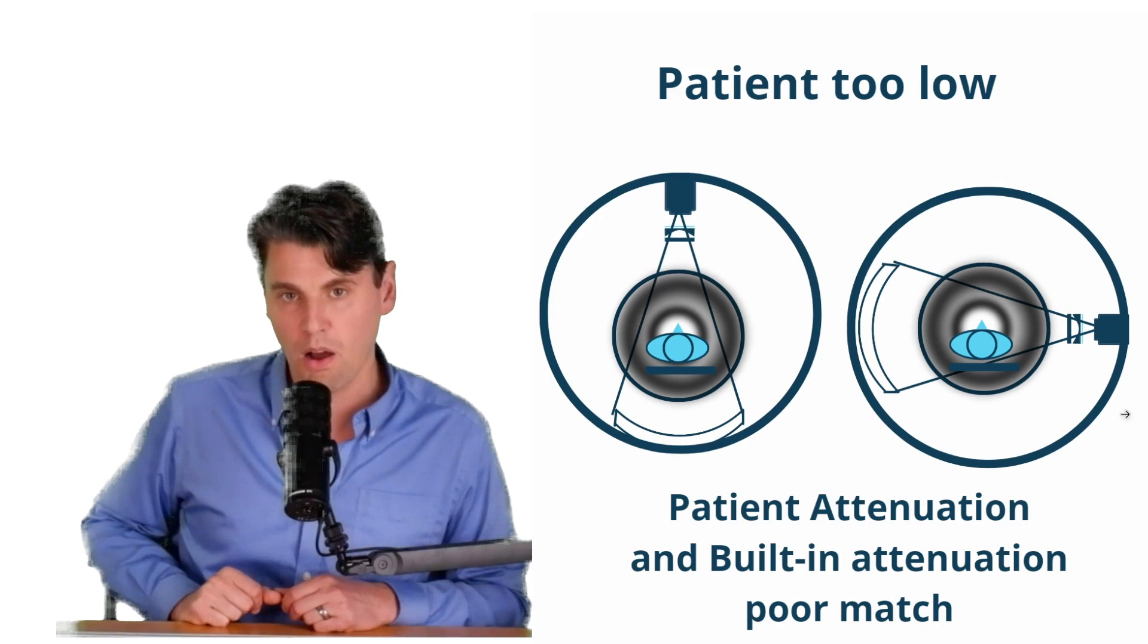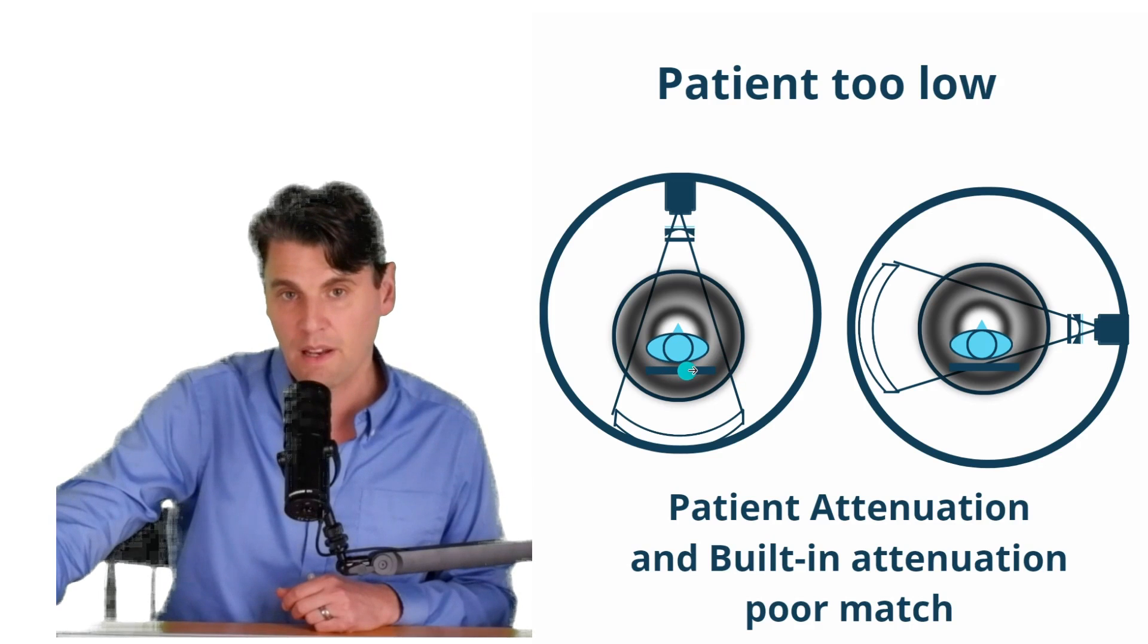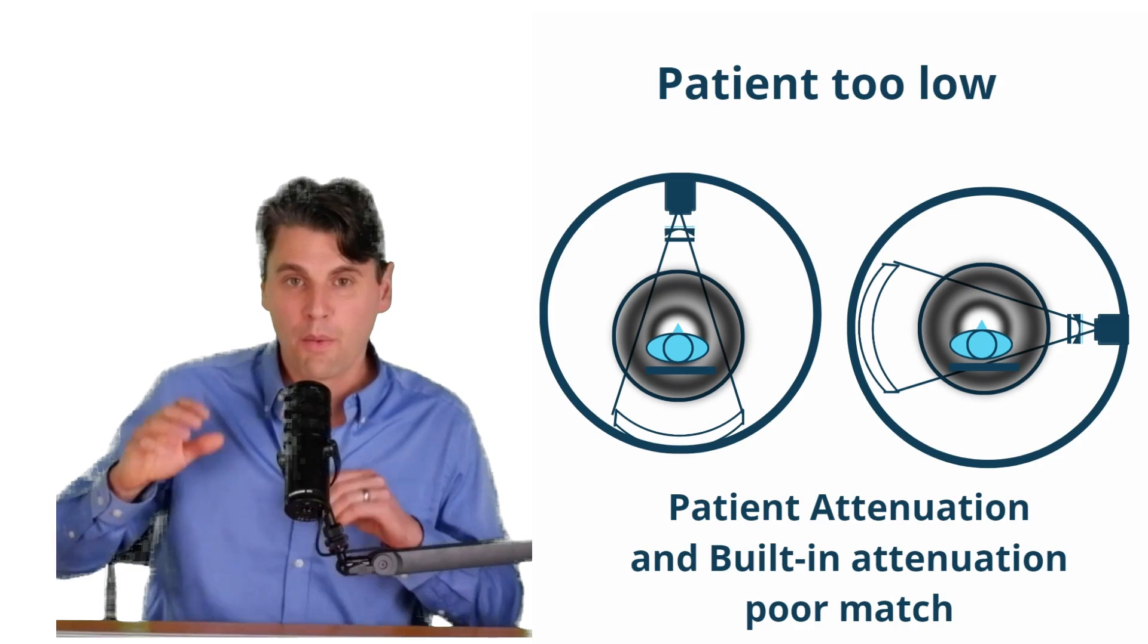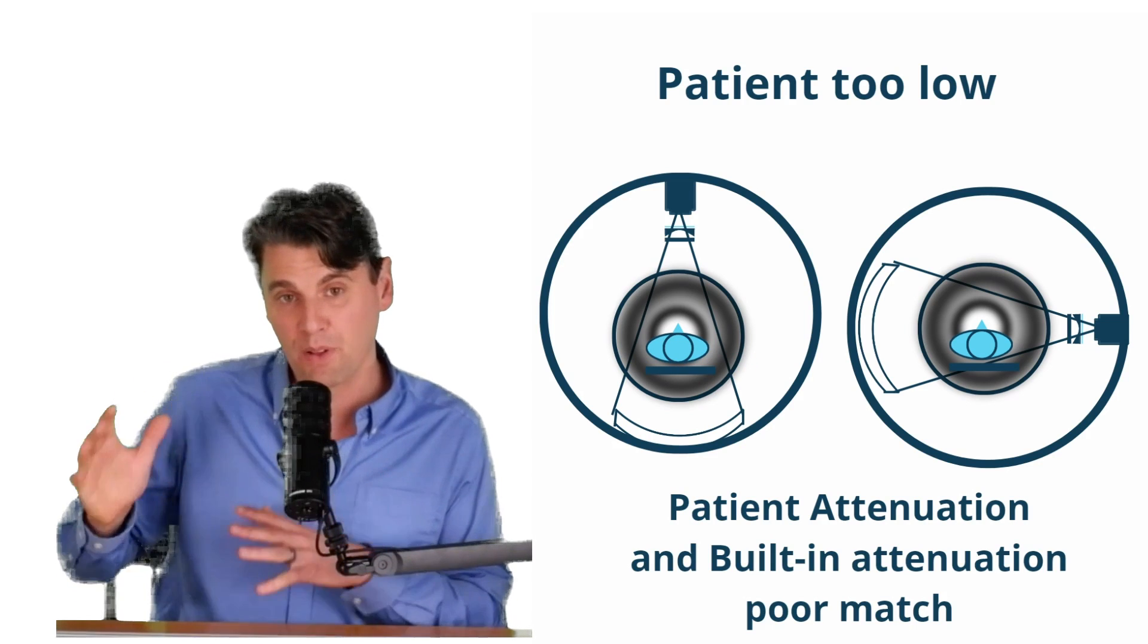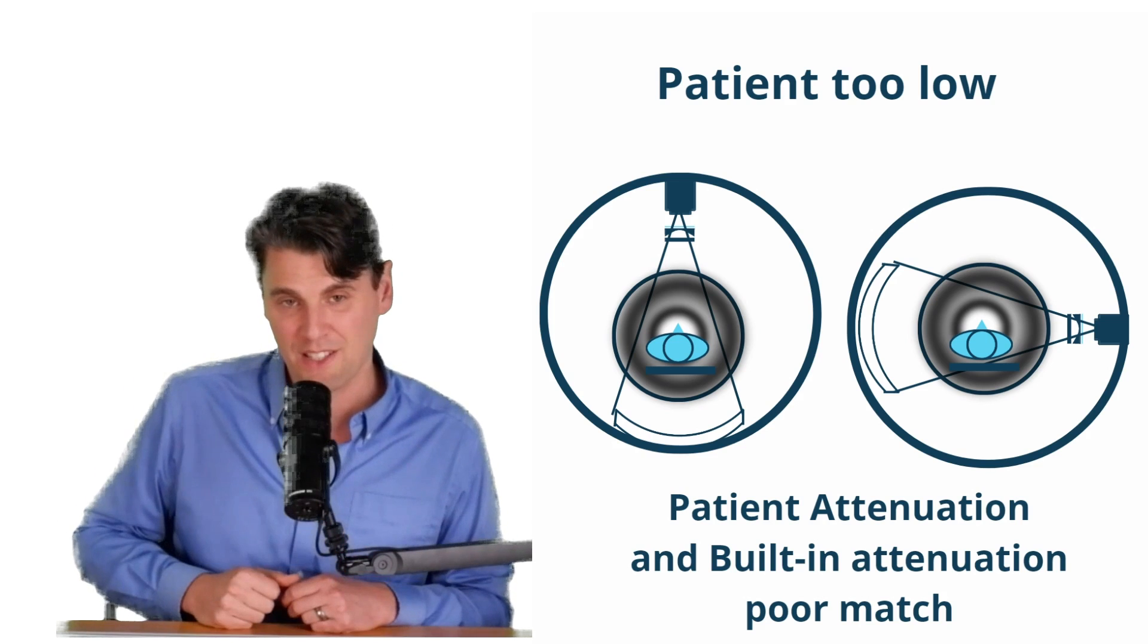Again, if your patient's too low, what you'll see is actually the opposite effect. So again, if the patient's lying on their back, you would expect to see more noise around their spine because there's a mismatch between the built-in attenuation of the bowtie filter and the actual patient attenuation.